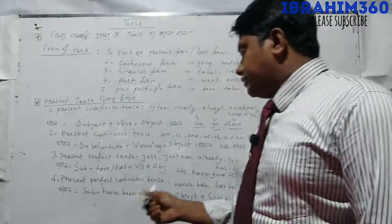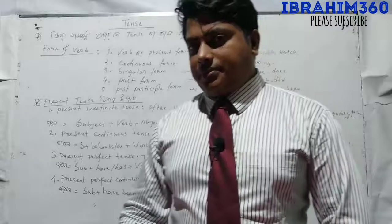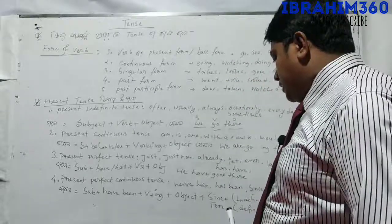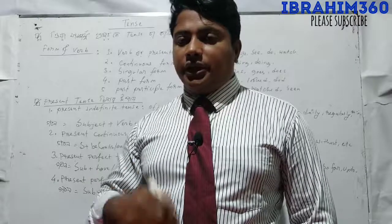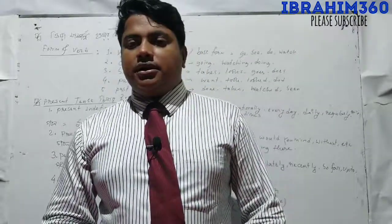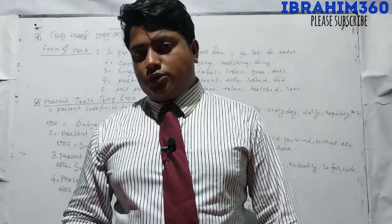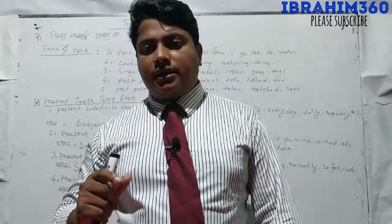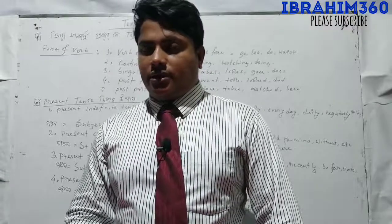Present perfect continuous tense uses have been / has been. We use 'since' for a specific point in time and 'for' for an indefinite duration. For example: 'I have been doing this since Monday' — Monday is specific. And: 'We have been doing this for 10 days' or 'for a long time' — that is indefinite. Since we have been doing this for a long time.